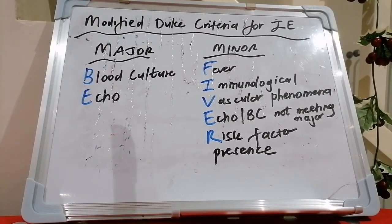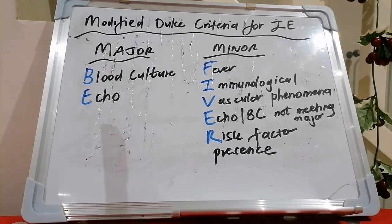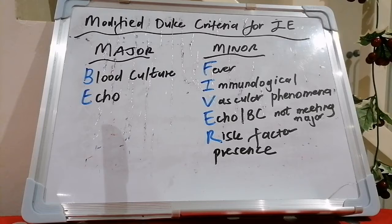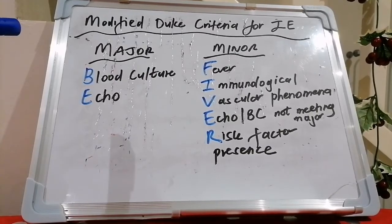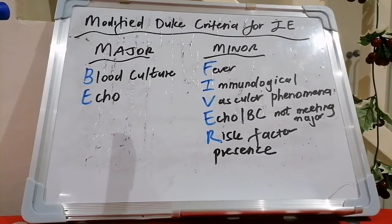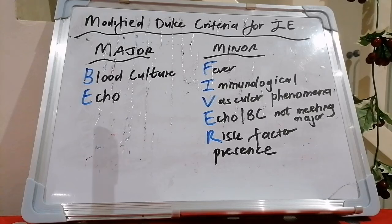Or you may have microorganisms consistent with endocarditis from persistently positive blood cultures — that's more than two positive blood cultures drawn more than 12 hours apart, or all three of a majority of more than four separate blood cultures with the first and last samples drawn within one hour, or a single blood culture positive for Coxiella burnetii.